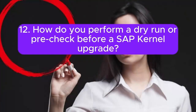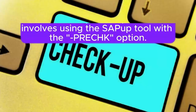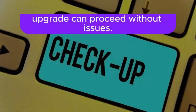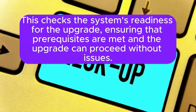12. How do you perform a dry run or pre-check before a SAP kernel upgrade? A dry run or pre-check involves using the SAPUP tool with the PREC option. This checks the system's readiness for the upgrade, ensuring that prerequisites are met and the upgrade can proceed without issues.